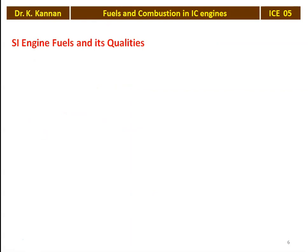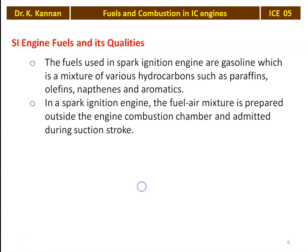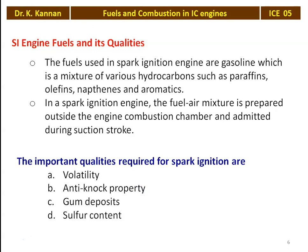The SI engine fuels and their qualities. For an SI engine — that is a petrol engine — the qualities required are: volatility, anti-knock property, gum deposit, and sulfur content. The fuel used in the spark ignition engine is gasoline, which is a mixture of various hydrocarbons such as paraffins, olefins, naphthenes, and aromatics. In a spark ignition engine, the fuel-air mixture is prepared outside the engine using a carburetor, which mixes air and fuel at the correct proportion before admitting it into the engine cylinder during the suction stroke.